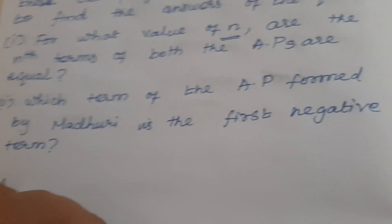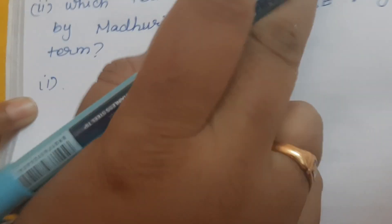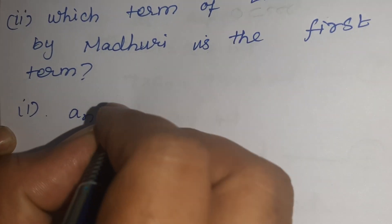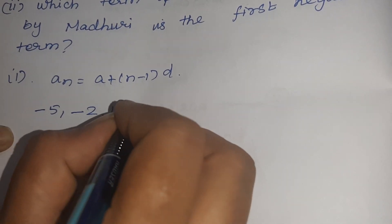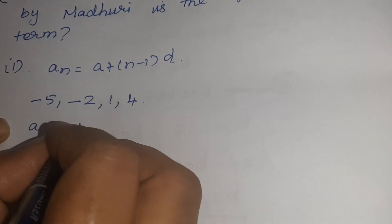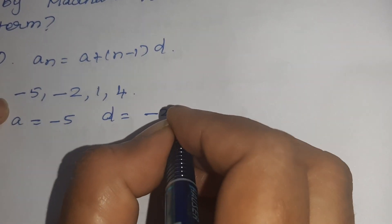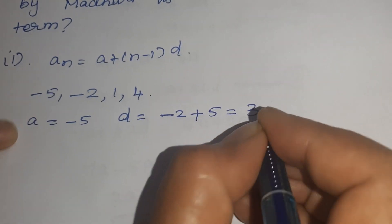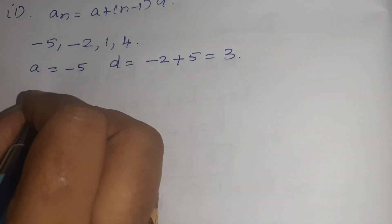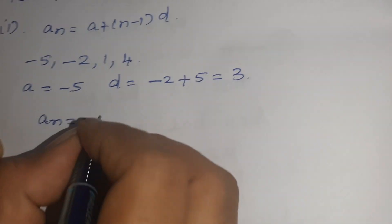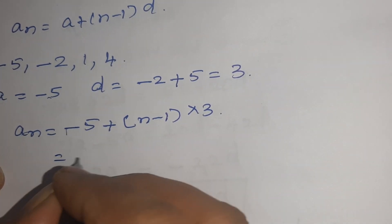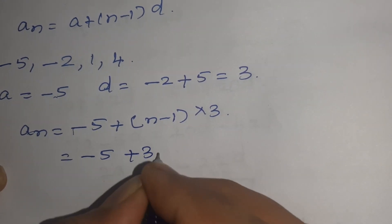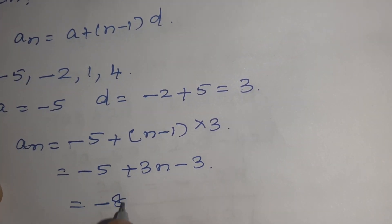So the formula to find the Nth term is AN = A + (N-1) × D. For the first progression -5, -2, 1, 4: A = -5 and D = -2 - (-5) = 3. So AN = -5 + (N-1) × 3 = -5 + 3N - 3 = -8 + 3N.